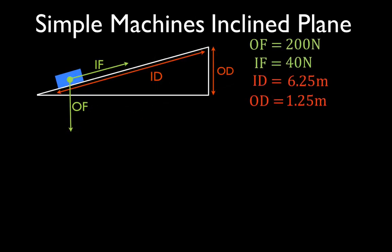Right, and this is the situation we have. We have a simple machine, which is an incline plane. This white triangle is our incline plane. We have an object on the incline plane, this blue rectangle right here.